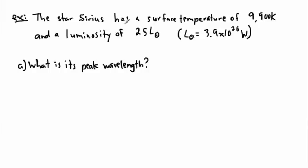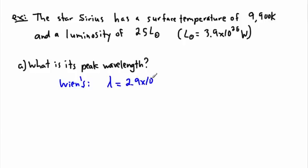The first question is: what is its peak wavelength? We can use Wien's displacement law. We're going to use Wien's displacement law, which tells us that lambda is equal to 2.9 × 10⁻³ divided by the temperature.